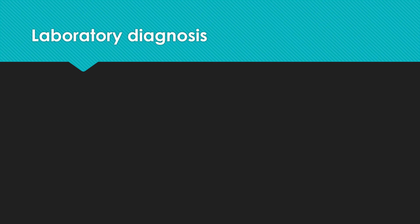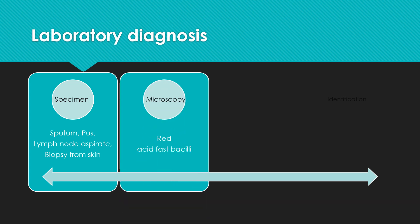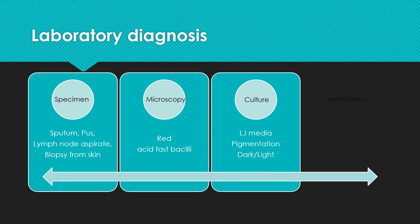For laboratory diagnosis, specimen collection depends on the type of infection. Specimens include sputum, pus, lymph node aspirate, biopsy, etc. For microscopy, we perform acid-fast staining, where red acid-fast bacilli are seen, similar to Mycobacterium tuberculosis, but we need to differentiate them. For culture, we use LJ medium and incubate it in light and dark separately, to differentiate between photochromogens and scotochromogens.